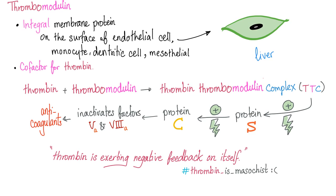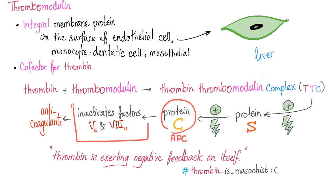Thrombin plus thrombomodulin forms the thrombin-thrombomodulin complex, or TTC, which will activate protein S, and then protein S will activate protein C — this important compound is also known as activated protein C, or APC. Protein C will then inactivate factors 5 and 8. C and S are anti-5 and anti-8, and they act as anticoagulants.